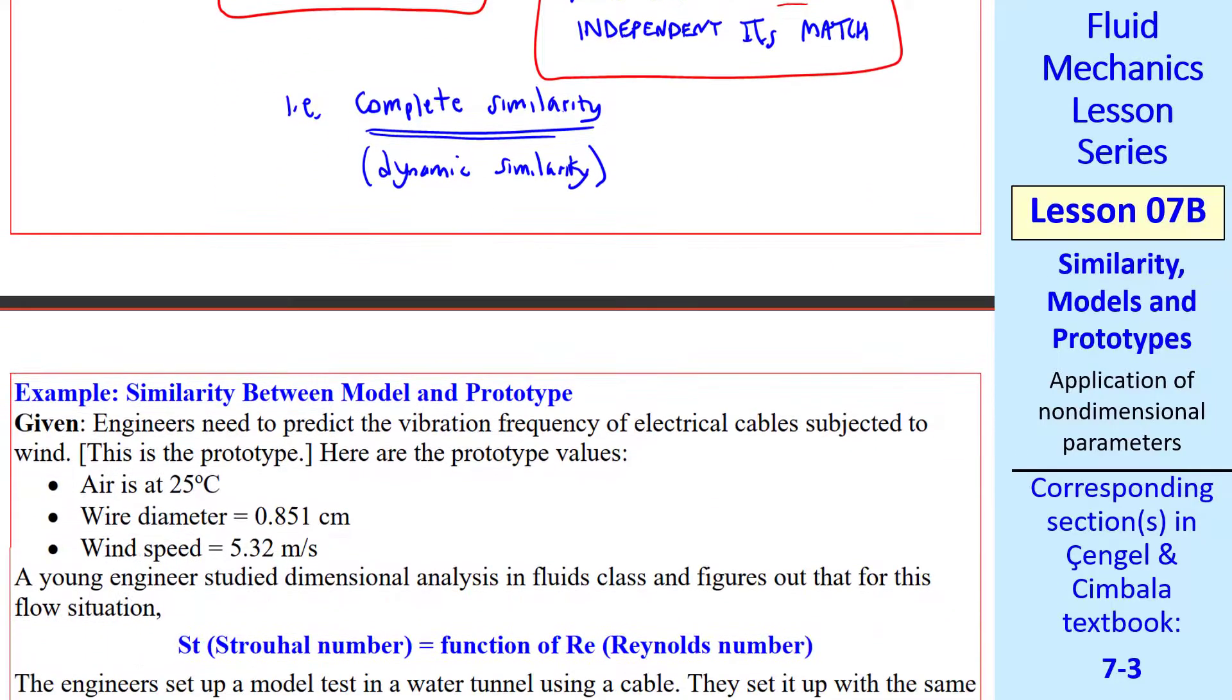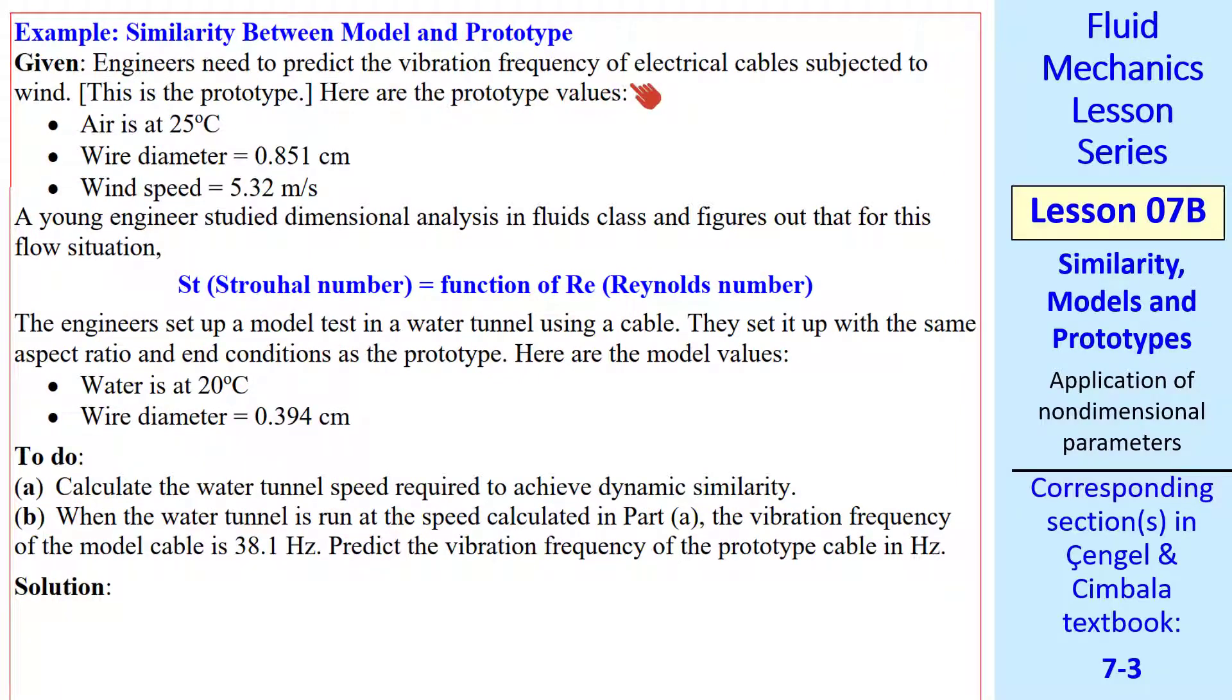Now let's do an example problem. Engineers need to predict the vibration frequency of electrical cables. These cables are the prototype, and here are their values. We have air at 25 degrees C. We have the wire diameter and the wind speed. I'll put subscripts P for the prototype. At 25 degrees C, we write the density and viscosity of the air. We'll call this diameter DP and this wind speed VP. There are many named dimensionless parameters, which we'll talk about in the next lesson. One of them is Strouhal number, and it turns out that in this kind of a problem, Strouhal number is a function of Reynolds number.